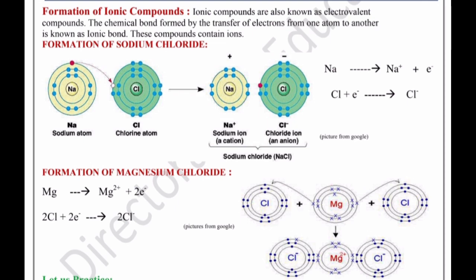Formation of magnesium chloride: Magnesium ne two electrons diye, to us pe plus two charge aa gaya — yeh ban gaya cation. Aur chlorine ne woh two electrons grant kar liye. Har ek chlorine mein ek minus ka charge aa gaya. Do chlorine ke atoms hain to unhone do electrons grant kar liye. Is tarike se magnesium ka ek ion, chlorine ke do ions se attach ho gaya — donon ko ek ek electron dekar. Magnesium ban gaya positive ion yaani cation, aur chlorine ban gaya negative ion yaani anion.